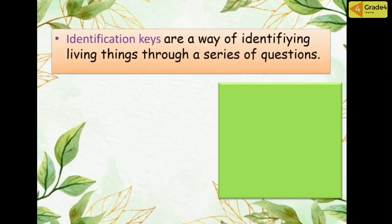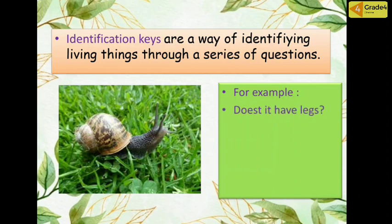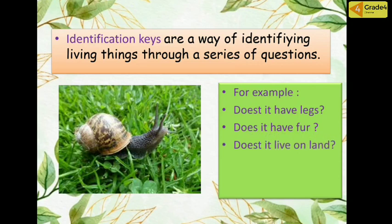Identification keys are a way of identifying living things through a series of questions. For example, I have a snail in the picture. Here are some questions we might ask to find out if that animal is a snail. Does it have legs? Does it have fur? Does it live on land? These are examples of questions for an identification key.